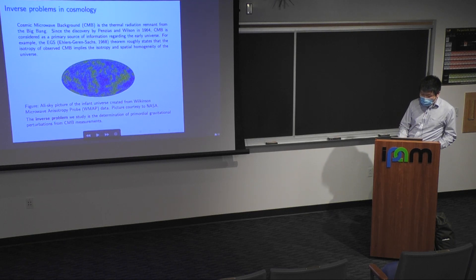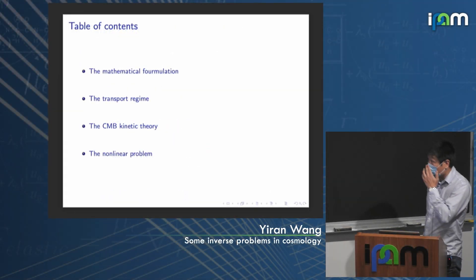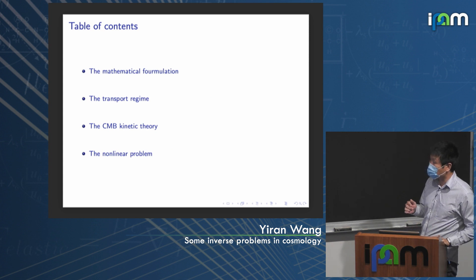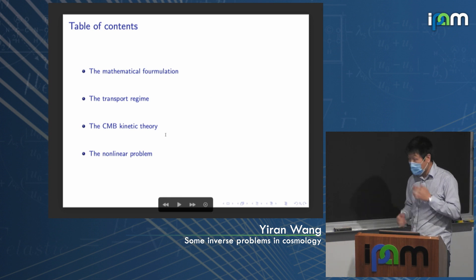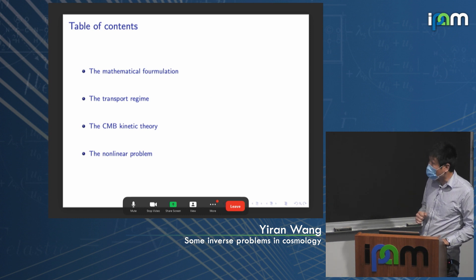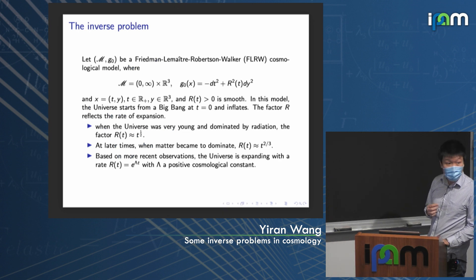The inverse problem we are going to study is to determine primordial gravitational waves from measured CMB data. CMB data are measured to high precision these days by various satellites like WMAP and the Planck surveyor. The plan of my talk is: first, the mathematical formulation; second, the transport regime where the problem can be studied using an integral transform, ignoring photon interactions; third, CMB kinetic theory with photon interactions using a Boltzmann equation model; and finally, a nonlinear theory for a scalar problem.